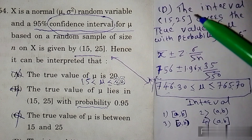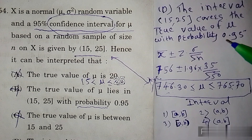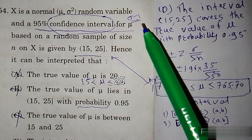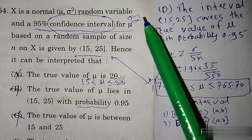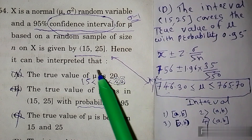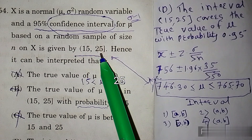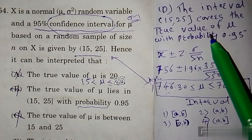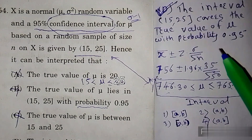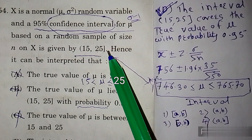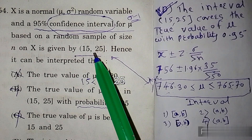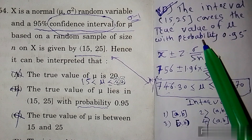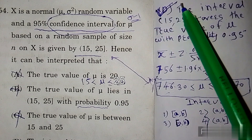Option D है: the interval 15 to 25 covers the true value of mu with probability 0.95. Probability 0 से 1 के बीच lies होती है, total probability 1 है। यह interval — 15 से 25 — 0.95 probability के साथ mu को cover कर सकता है। Hence option D is correct। Lower limit 15 और upper limit 25 — इनके covers करने के chances 0.95 हैं।